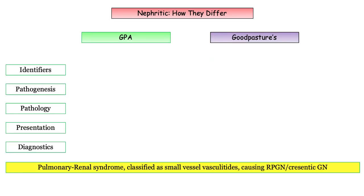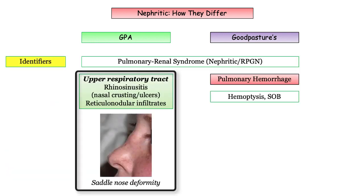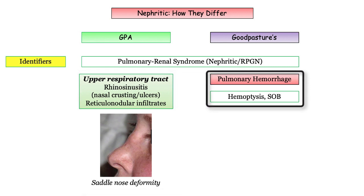GPA and Goodpasture's are both prototypic pulmonary renal disorders classified as small vessel vasculitides resulting in rapidly progressive or crescentic glomerulonephritis. But how do they differ? That will be the money on the USMLE. GPA will be distinguished by its involvement of the upper respiratory tract. If a patient presents with rapidly progressive glomerulonephritis and also has hemoptysis plus nasal crusting, ulcers, or saddle nose deformity, they are telling you the patient does not have Goodpasture's. Pulmonary involvement with Goodpasture's is restricted to pulmonary hemorrhage identified by hemoptysis with shortness of breath.